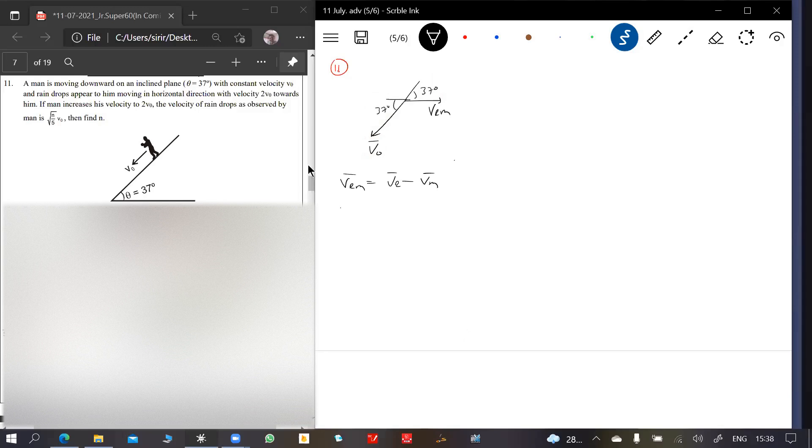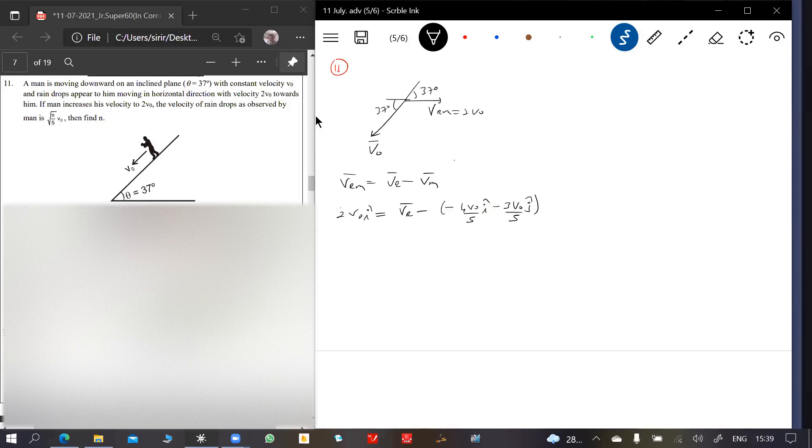Velocity of rain with respect to man is 2 v naught towards him. These are v naught. Let me put it - velocity of rain with respect to man is v naught minus v naught cos 37, which is 4 by 5, so minus 4 v naught by 5 i cap minus 3 v naught by 5 j cap. This is the velocity of man.